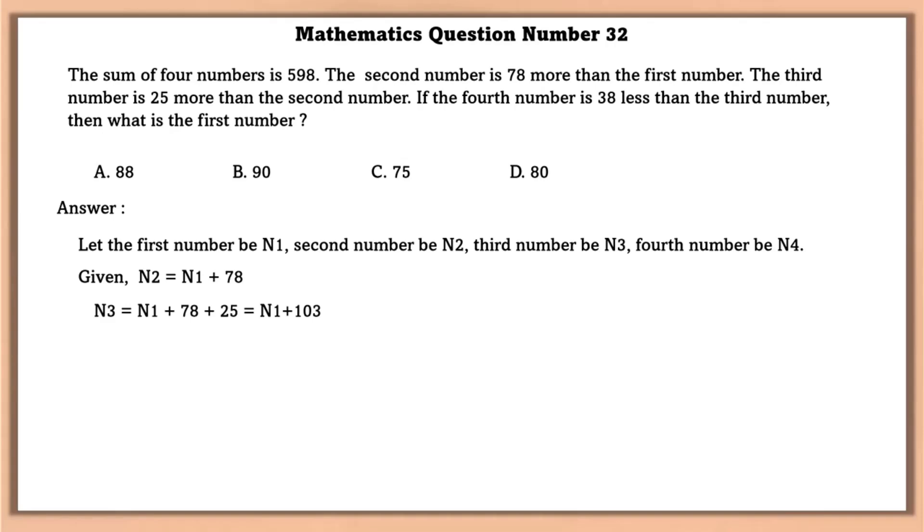Mathematics question number 32. The sum of 4 numbers is 598. The second number is 78 more than the first number. The third number is 25 more than the second number. If the fourth number is 38 less than the third number, then what is the first number? Let the numbers be N1, N2, N3, and N4. Given N2 is equal to N1 plus 78.